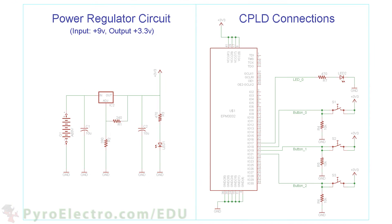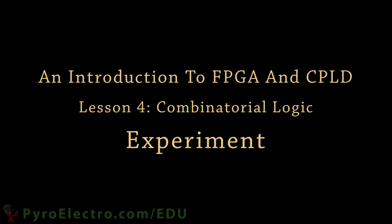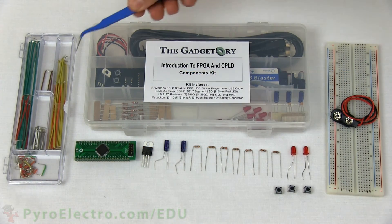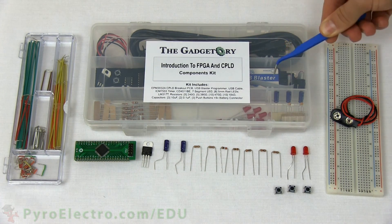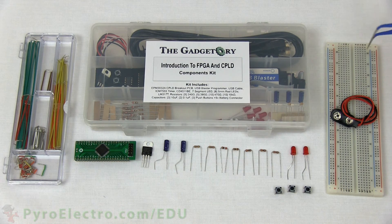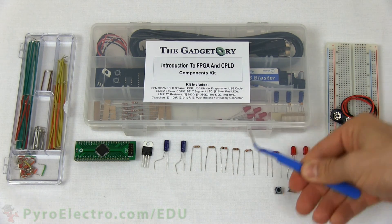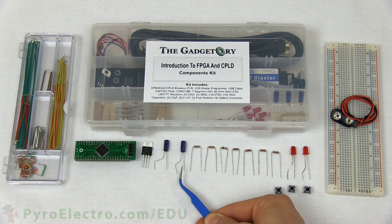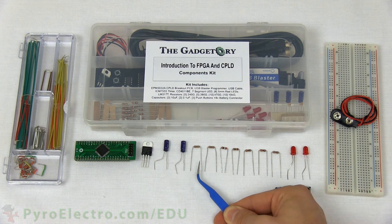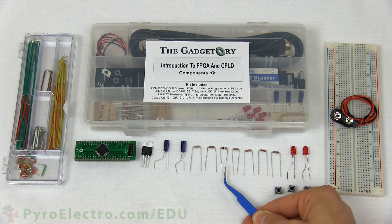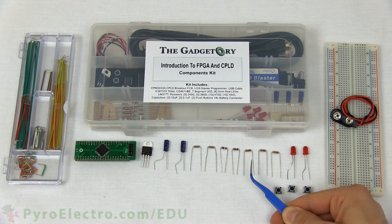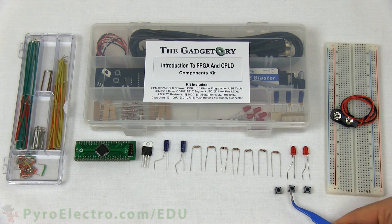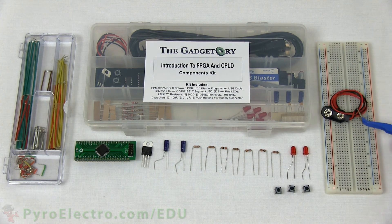Now let's go build it up. First let's look at all the parts used in this lesson: a jumper wire kit, a components kit, and a breadboard. The specific parts from the components kit are the CPLD breakout board, LM317 voltage regulator, two 10 microfarad capacitors, two 470 ohm resistors, a 390 ohm resistor, a 240 ohm resistor, three 10k ohm resistors, two red LEDs, three push buttons, and a 9V battery connector.